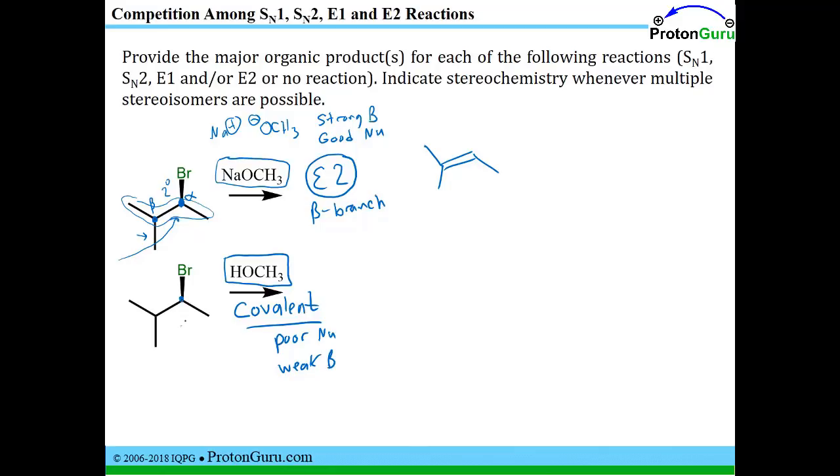So we look at our substrate and it's secondary. A secondary substrate can do SN1 and E1 reactions, and those reactions do not need a strong base or a good nucleophile. So we would expect some type of mixture of the E1 product, which is the alkene, and the SN1 product, which would be produced from this carbocation. This carbocation should rearrange to form a tertiary carbocation, which will then undergo substitution to form your SN1 product.